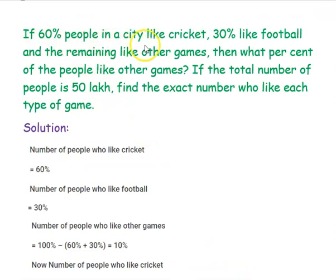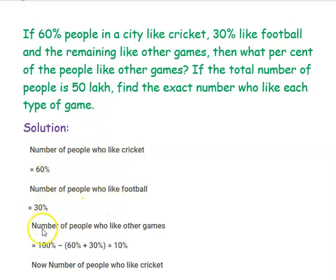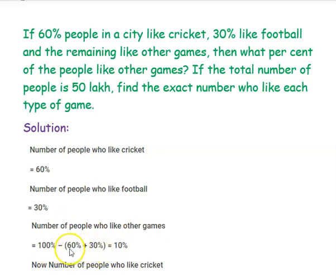Next example: if 60 percent of people in a city like cricket, 30 percent like football, and the remaining like other games, then what percent of the people like other games? If the total number of people is 50 lakh, find the exact number who like each type of game. The total is 100 percentage, so the number who like other games is 100 percentage minus 60 percentage plus 30 percentage, which is 100 minus 90, that is 10 percentage. So 10 percentage of the people like other games.